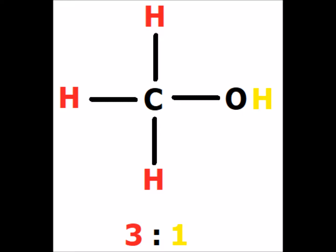In methanol, there are two types of hydrogen. One, shown in yellow, is the hydroxyl hydrogen. The other three are methyl hydrogens connected directly to the one carbon atom. Therefore, in NMR, you would see a 3 to 1 ratio of the red hydrogens to the one yellow hydrogen.